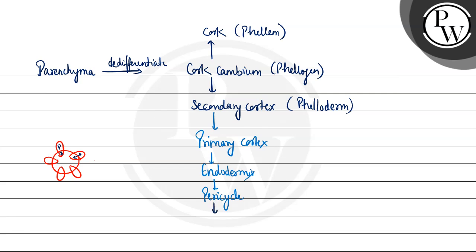yeh phir aage cut out karega secondary phloem aur secondary xylem in the secondary growth. Yaani secondary growth ke baad pericycle ke andar present hoga primary phloem. Usse next aa jayega ab secondary phloem. Uske andar present hoga secondary xylem. Aur usse andar present hoga primary xylem. Secondary xylem ko wood bhi kahte hain.